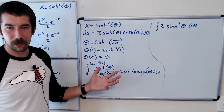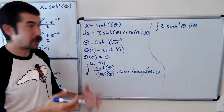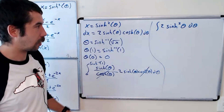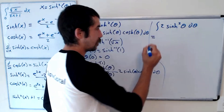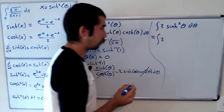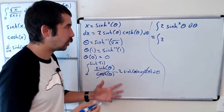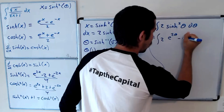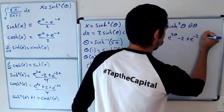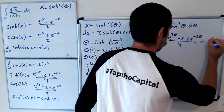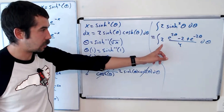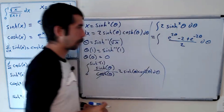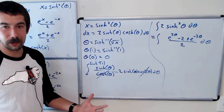To evaluate the integral of 2 sinh²(θ), we rewrite sinh²(θ) using the exponential form: (e^(2θ) minus 2 plus e^(-2θ)) over 4. Combined with the factor of 2, the 2 and 4 simplify, and we're ready to evaluate.